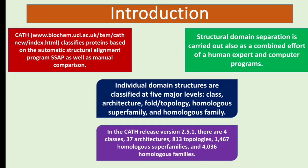Structural domain separation is also performed, which is basically due to human efforts and computer programs. In CATH, we classify individual protein structures in five levels: Class, Architecture — in CATH we basically call Class B — also Fold, Topology, Homologous Super Family, and Homologous Family.